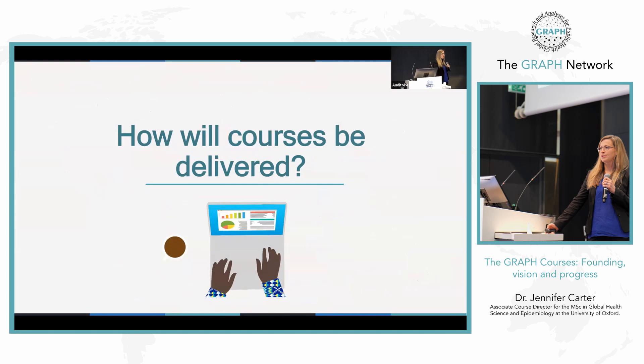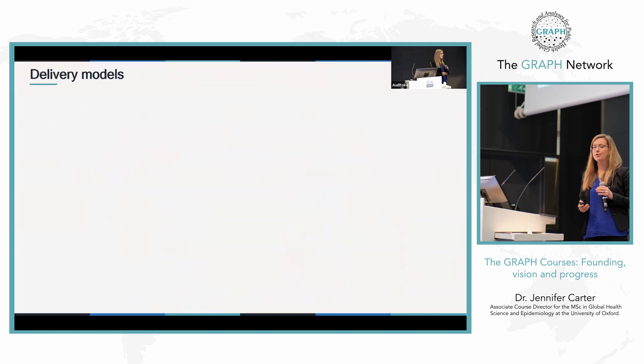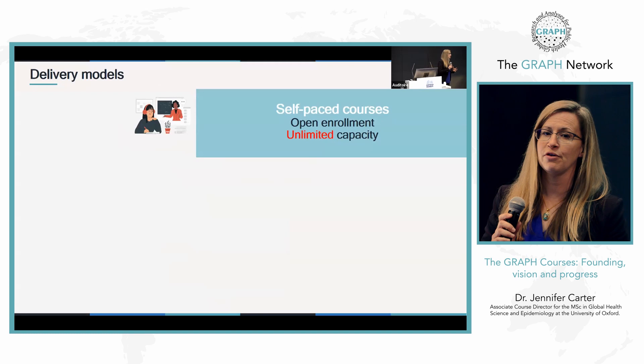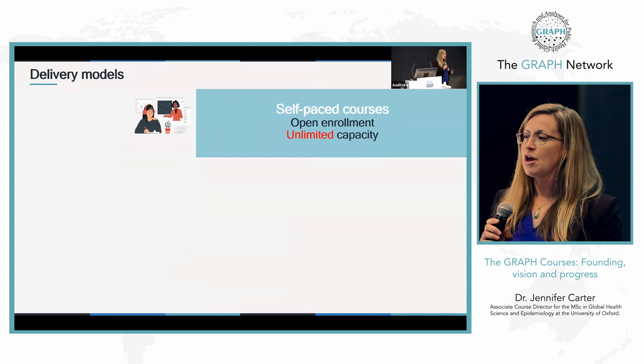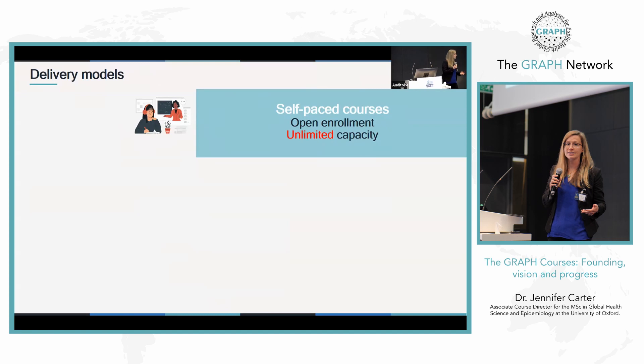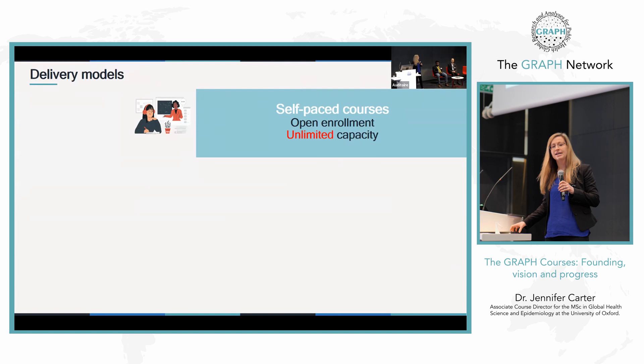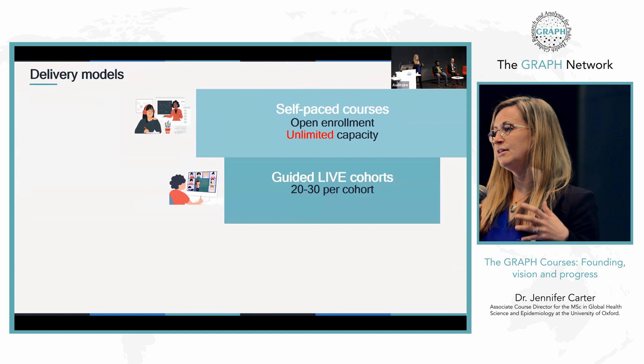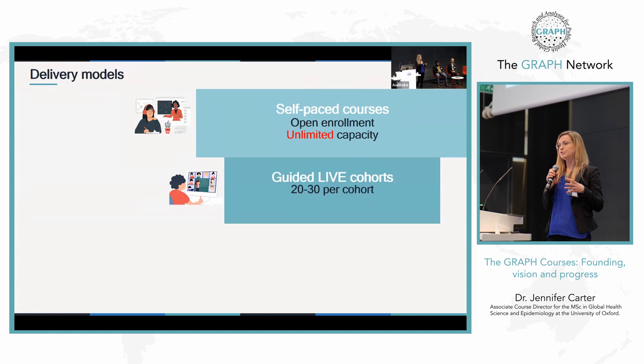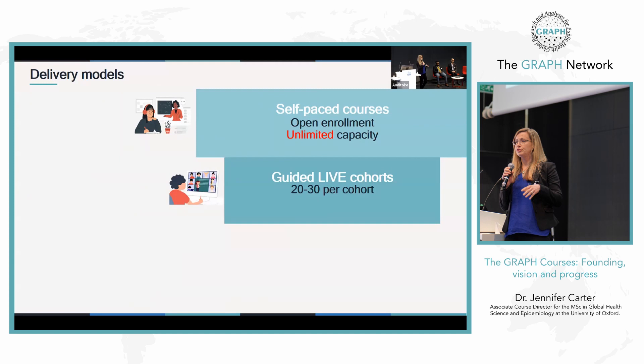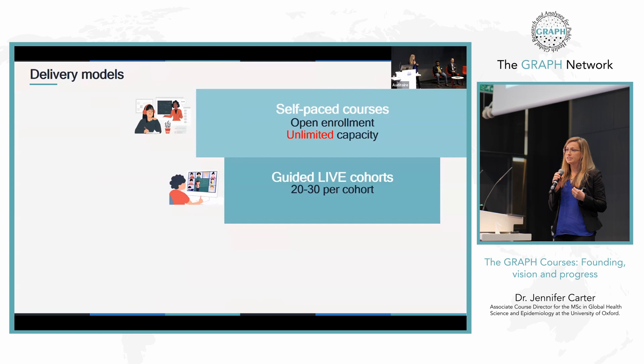So how will these courses be delivered? The platform that Kenne presented forms the first delivery model — everything from the videos, quizzes, and community will be available online as self-paced courses. Students can enroll at any time and work at their own pace, with unlimited capacity for student numbers. We can also do guided live cohorts, where experts in the Graph Network take 20 to 30 students at a time over three months and lead them through the courses with weekly online tutorials. Coming from Oxford, I know that tutorials are the gem of our education system — they really consolidate and deepen the learning, and we know it's effective.